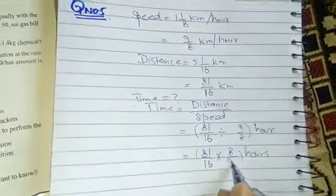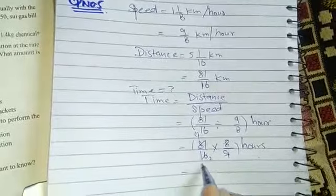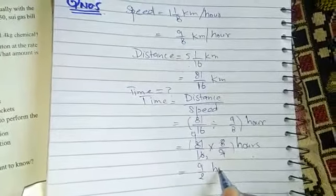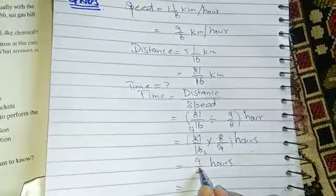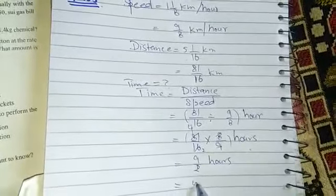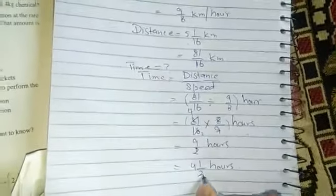9 nines are 81, and 8 twos are 16. So our answer becomes 9 over 2 hours. In mixed numbers it becomes 4 whole 1 over 2 hours. This is your answer.